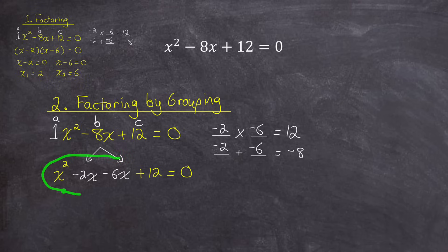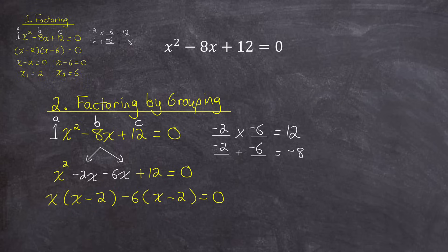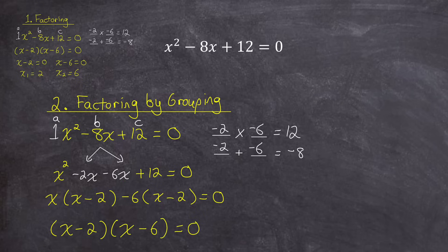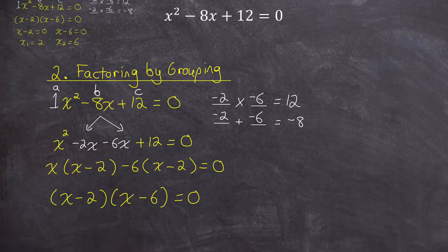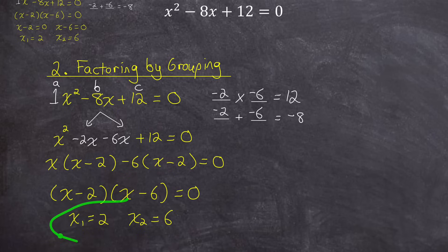Now I'll factor this four-term polynomial by grouping. I'll take a common factor from the first two terms — factoring out an x — and then from the last two terms, negative 6x plus 12, I'll factor out a negative 6. Notice I have the common binomial x minus 2, so I can factor that out. Once I factor out those x minus 2s, I'm left with x minus 6 as my second factor. So the factored form is x minus 2 times x minus 6 — just like method 1. Setting each factor to zero gives the same two answers of 2 and 6.